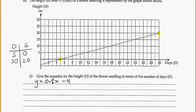So from the calculator, we have y is equal to 0.8x minus 4. But again, we need to remember to change our variables. We always write x first and then y. So writing this appropriately, we'll have h is equal to 0.8d minus 4. And that's our equation.